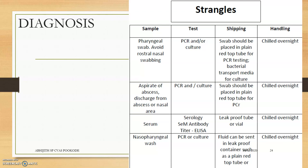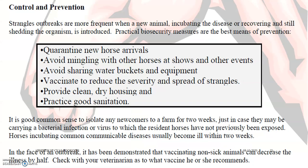Tests to consider include PCR and serological titers. For control and prevention: quarantine new horses coming onto farms, avoid sharing water buckets, and avoid sharing equipment that can lead to contamination of healthy horses from infected ones.